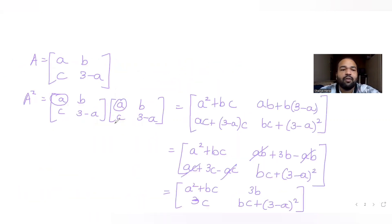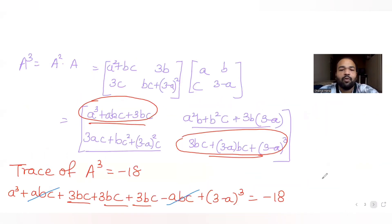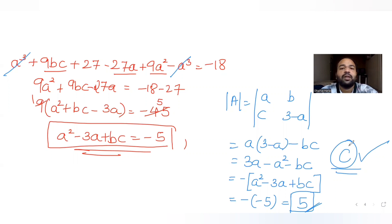So this is how we solved the question where trace of A and trace of A³ were given. We expressed the matrix in terms of a, b, c using the trace condition, computed A² and A³, equated the trace of A³ to -18 to get one expression, and matched it with det(A) to get the answer. The correct answer for this question is option C, which is 5.